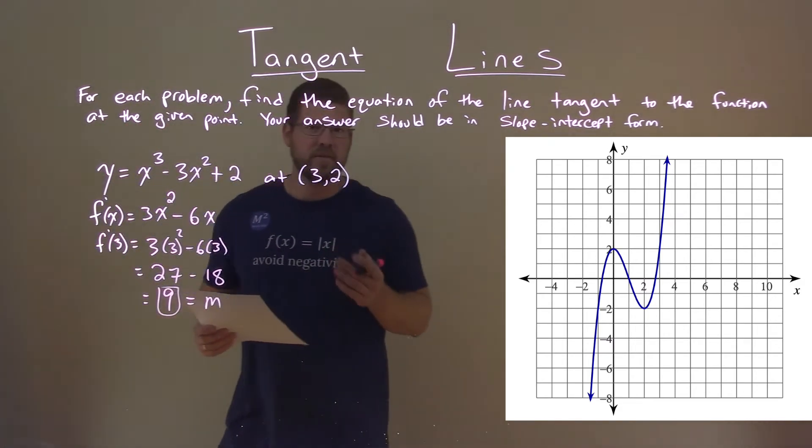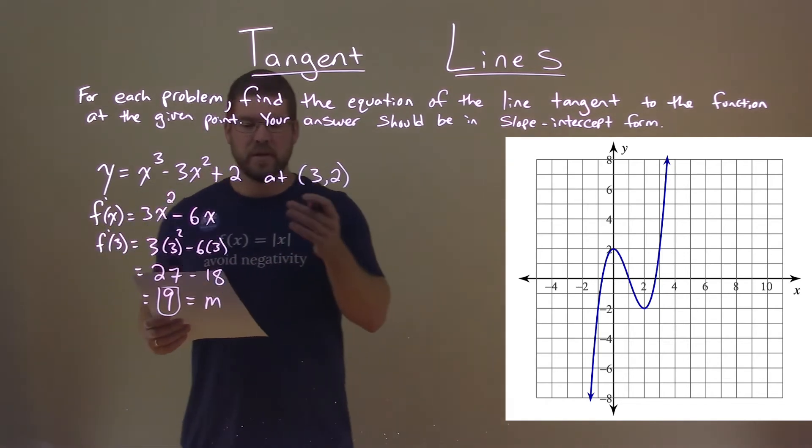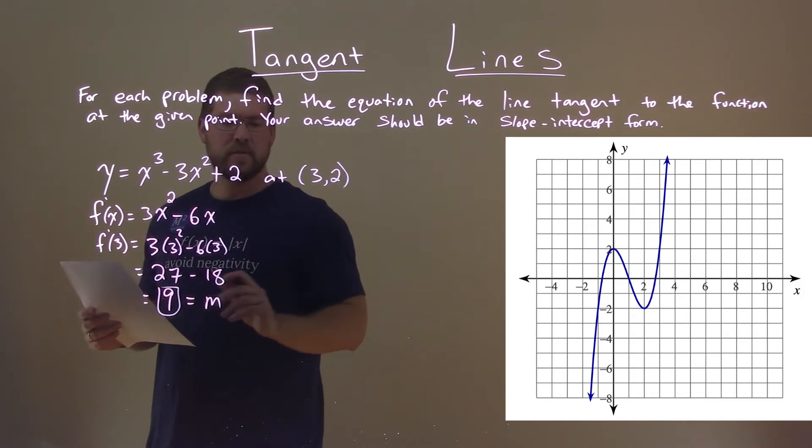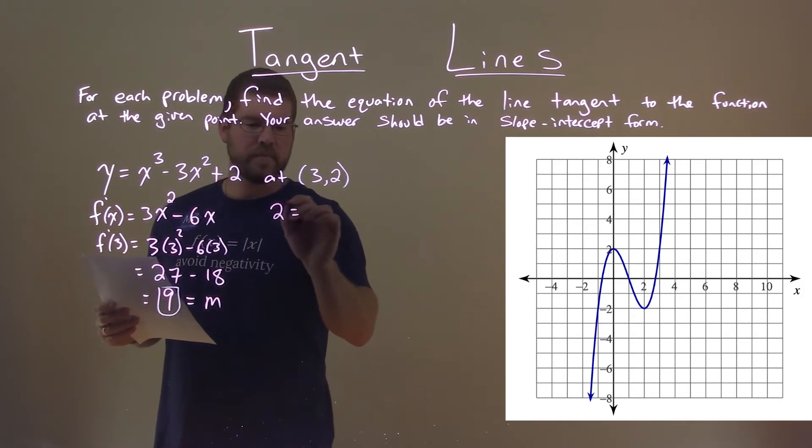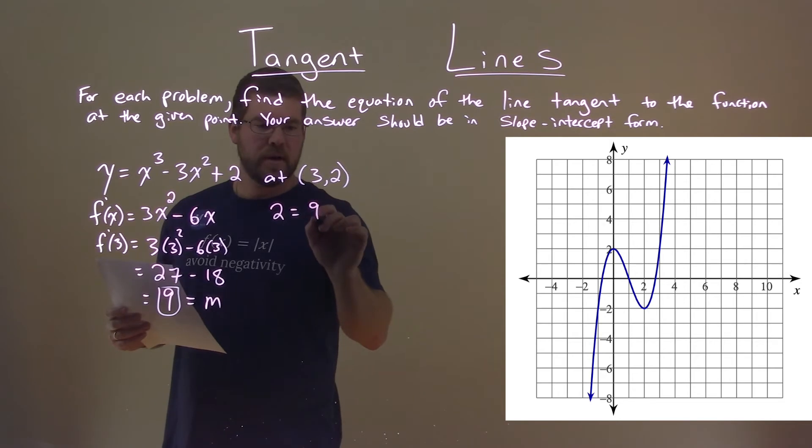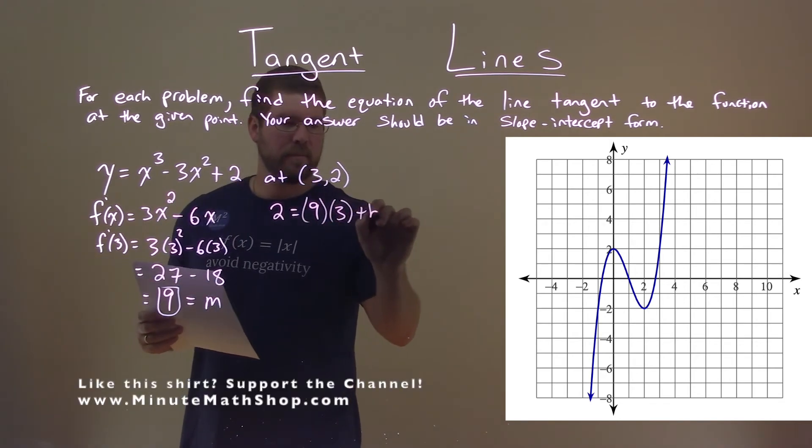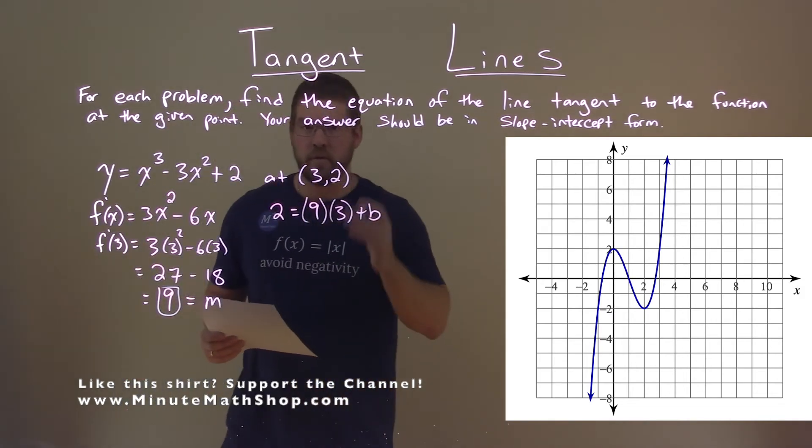The process now is just like we normally do with an equation of a line. We have our slope, so we use the y equals mx plus b form. Using the coordinate point and the slope: 2 equals 9 times 3 plus b. Now we're solving for b.